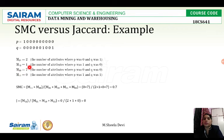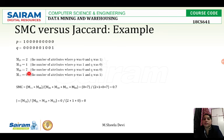For m00, where both p and q are 0, counting through the vectors it appears 7 times, so m00 equals 7. For m11, where both p and q are 1, that combination does not appear at all, so m11 equals 0.